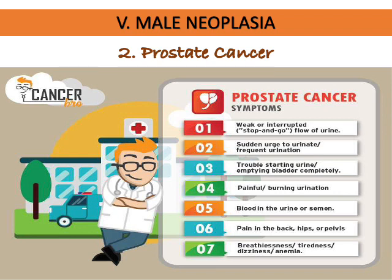Prostate cancer has no signs or symptoms in its early stages, but as the prostate enlarges, manifestations include interrupted urine flow, sudden urge to urinate, frequent urination, trouble starting urination, difficulty emptying the bladder completely, painful or burning urination, and blood in the urine or semen. Late signs include pain in the back, hips, or pelvis, plus breathlessness, tiredness, dizziness, and anemia.